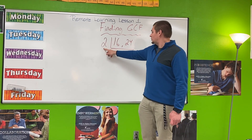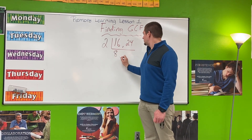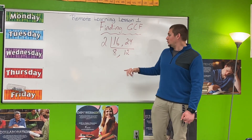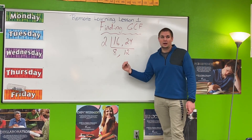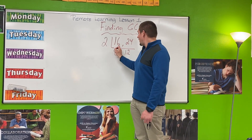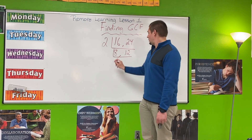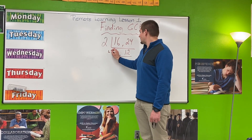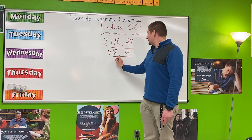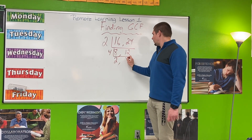When I factor out a 2 from 16, I am left with 8 and then 12. Now you have to look at the numbers that you are left with. Can I factor out anything else? Yes, I can. I see that 8 and 12 both have a factor of 4, and I can factor out a 4. When I am left with that, 4 can go into 8 two times, 4 can go into 12 three times.